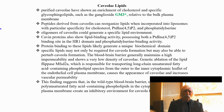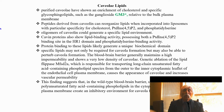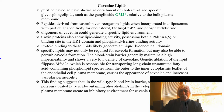Cavin proteins also show lipid binding activity, possessing both a PIP2 binding site in the HR1 domain and a phosphatidylserine binding site. Protein binding to those lipids is generally required to produce a biochemically functional domain. Specific lipids may not only be required for caveolae formation, but may also be able to perturb the formation. The blood-brain barrier generally maintains high impermeability and shows a very low density of caveolae — the more caveolae, the more permeable, but by facilitated diffusion rather than passive diffusion.